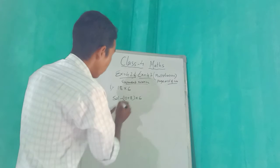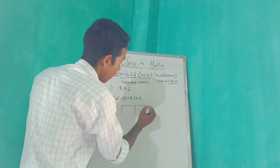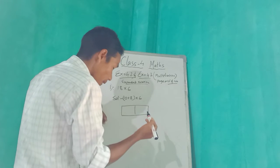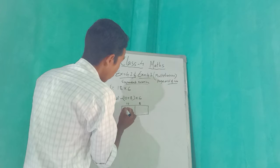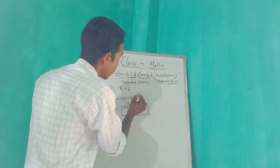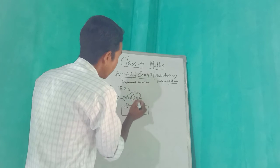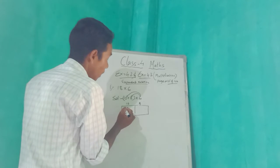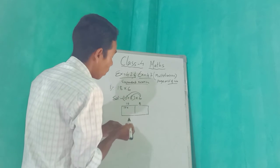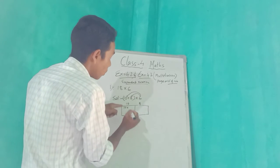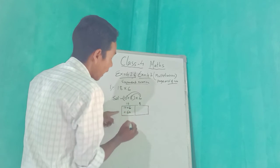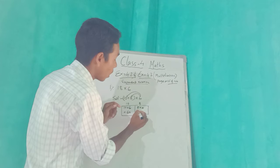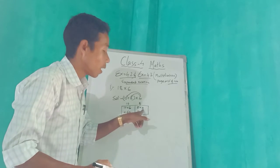18 means 10 plus 8. 18 into 6. We will write this in a box — suppose this is a box. We write 10 here and 8 here. So 10 into 6 and 8 into 6. 6 into 10 and 6 into 8. Now we will do each part: 10 into 6 equals how much? 60.